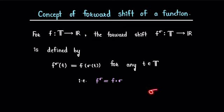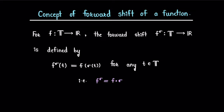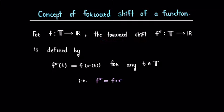Since we know that σ, that is the forward jump operator in a timescale, is a function from timescale T to T, the composition of f with σ is possible, and the forward shift f^σ is the composition of f with σ. Now we will see this concept of forward shift through an example.